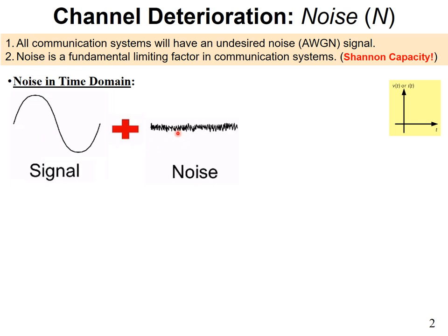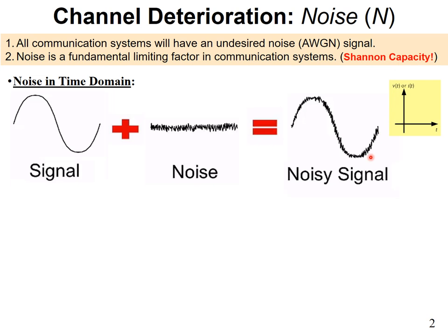You want to make sure your signal is stronger than the noise — meaning the power of the signal should be stronger than the power of the noise. At the receiver, what you end up getting is something like your original signal but with ripples — that's because of the noise. This is your noisy signal. Everything is in the time domain: T on the x-axis, voltage or current on the y-axis.